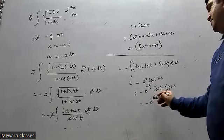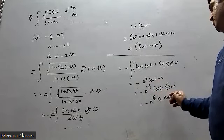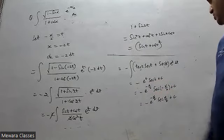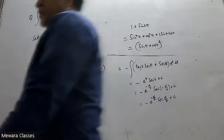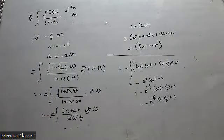Sec minus x by 2. And sec minus theta is sec theta. So we get minus e to the power minus x by 2 sec x by 2 plus sec x by 2 plus c.